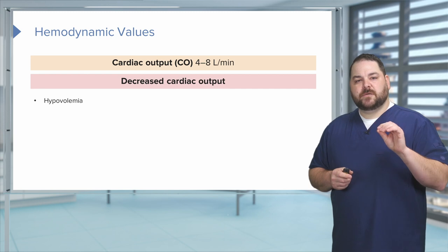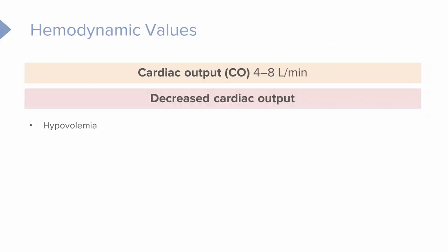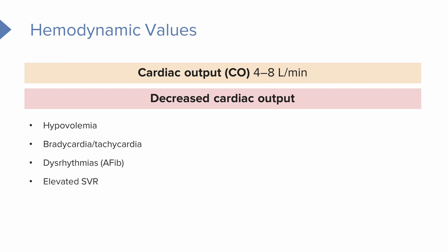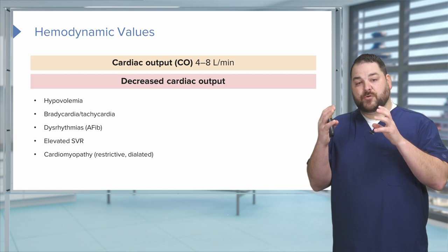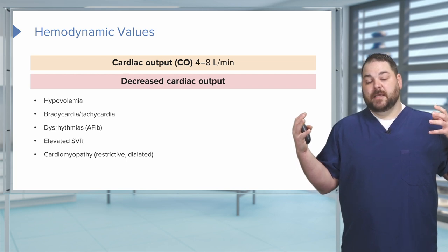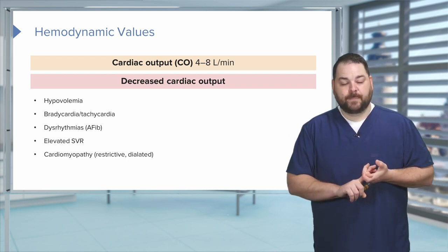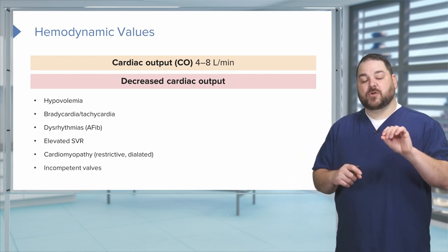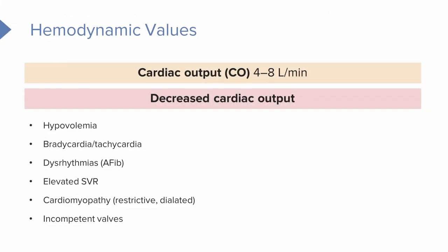What decreases cardiac output? Such things as hypovolemia, brady and tachycardia, dysrhythmias, too high of afterloads and systemic vascular resistance. Specific cardiomyopathies — restrictive or dilated cardiomyopathy. Sometimes our ventricular walls are too stiff and they can't stretch, or maybe they're too dilated and they lose that Frank-Starling Law.